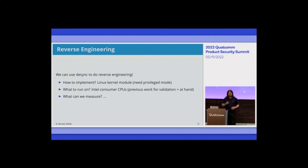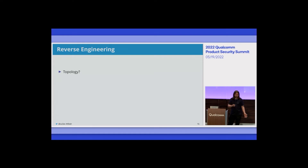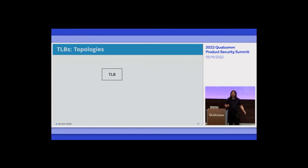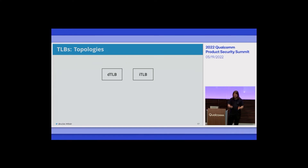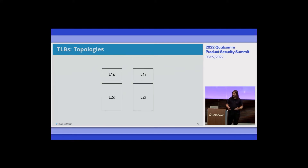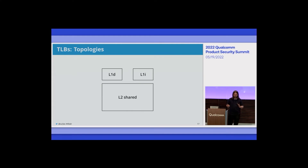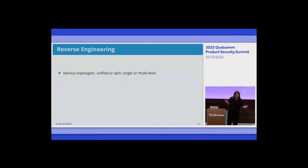To talk about what experiments we developed, we need to cover how TLBs are actually built. First, their topology. A TLB could be just one single box taking care of all entries, or it could be a hierarchy with a smaller faster L1 cache that when missed asks the slower larger L2 cache. You could have a split TLB where one part handles data accesses and another handles instruction fetches. Or you could have both — a hierarchical TLB and a split TLB — or even a split L1 with a shared unified L2.